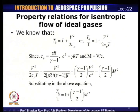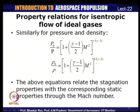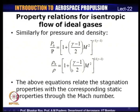This relates stagnation temperature to static temperature through Mach number. Extending to pressure and density via isentropic relations: P₀/P = [1 + (γ−1)/2 · M²]^(γ/(γ−1)), and ρ₀/ρ = [1 + (γ−1)/2 · M²]^(1/(γ−1)).